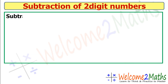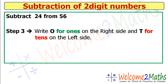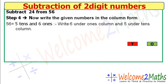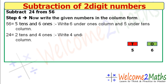Step number three: write the place value labels — O for ones on the right side and T for tens on the left side. Step number four: write the given numbers in column form. For 56, write 6 under the ones column and 5 under the tens column. For 24, write 4 under the ones column and 2 under the tens column.